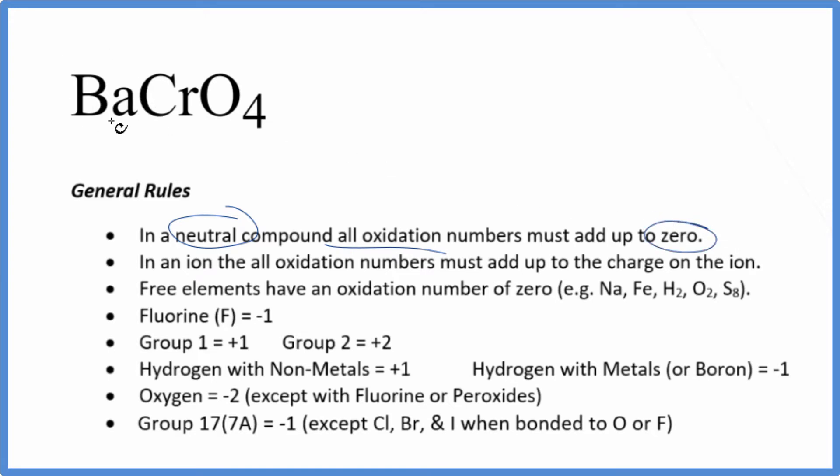We know that barium, that's in group 2 on the periodic table, so it'll have a plus 2 oxidation number. But chromium, that's a transition metal, and it can have different oxidation numbers. So we don't know what that is. We'll call it X.